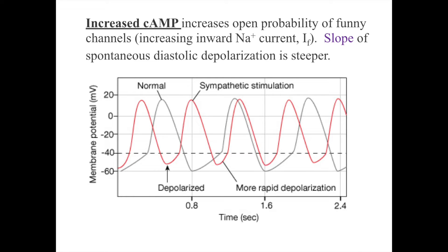When cyclic AMP is increased inside these pacemaker cells due to a sympathetic response, it increases the probability that the funny channels will open. The slope of the depolarization caused by the funny channel steepens and the heart rate increases.